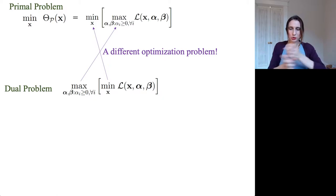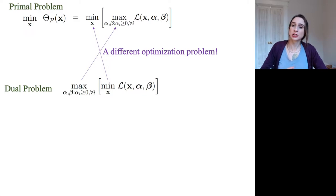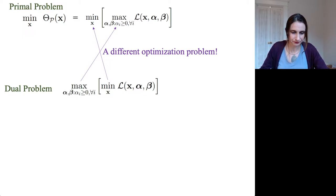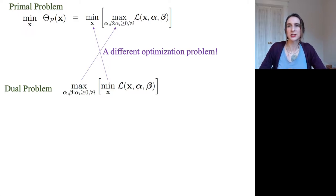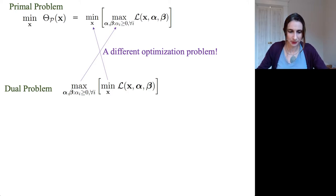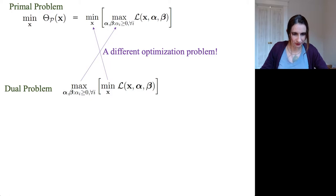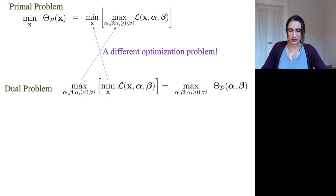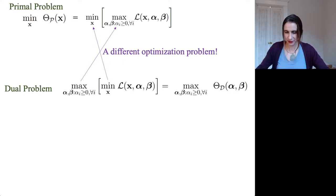In general, when you swap a max and a min, you don't expect the solution to be the same. But we're going to show that in some very special cases, it actually is the same. For now, I want you to think of the dual as being a nice, tight lower bound — kind of the tightest lower bound on the primal. So you have the dual problem written there.